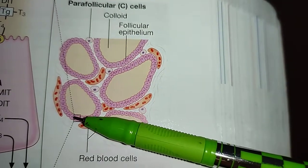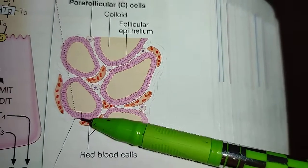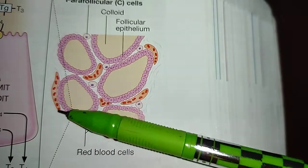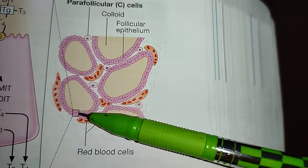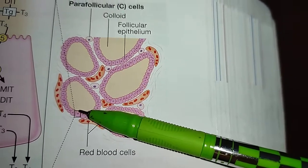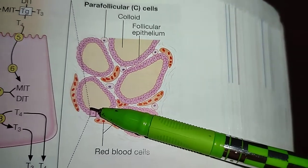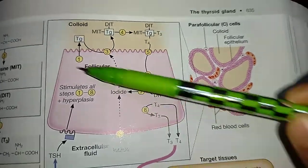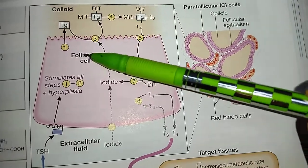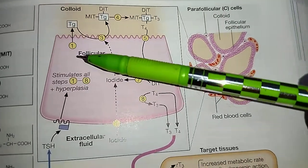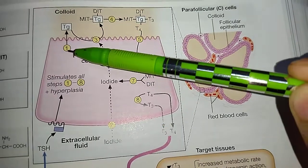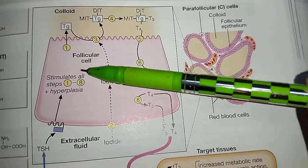We will now zoom into one of the thyroid follicular cells. This is the follicular epithelium, and from this epithelium we will zoom into one cell — this is one follicular cell. This is the thyroid follicular cell, and this is the colloid portion.